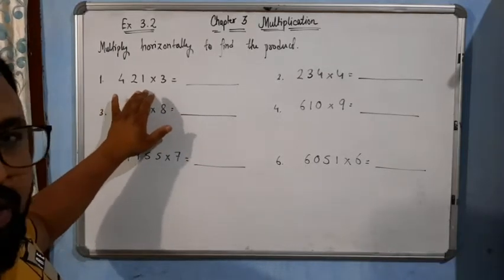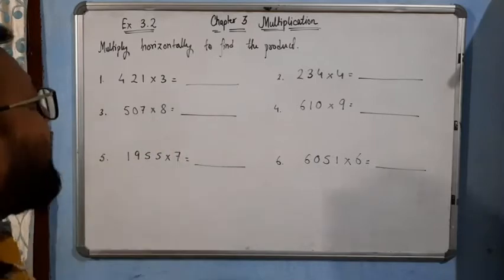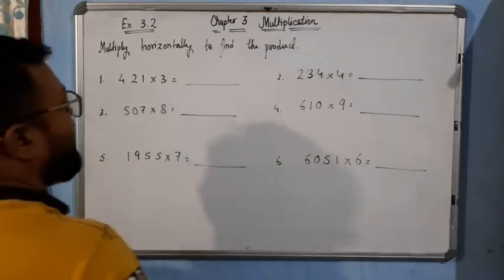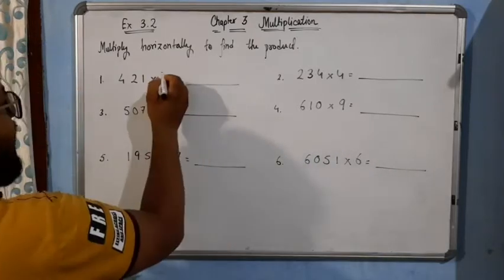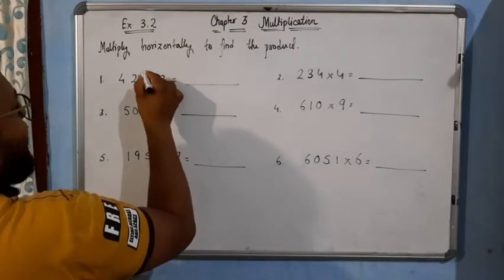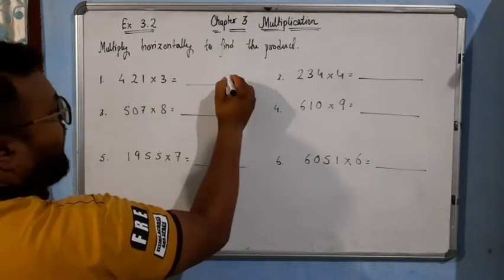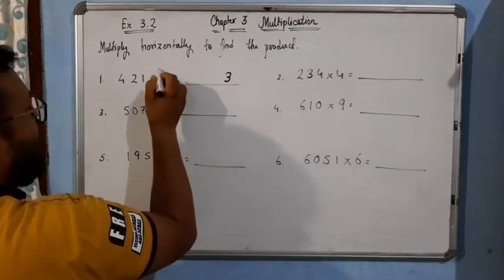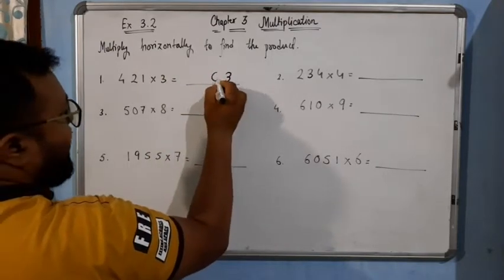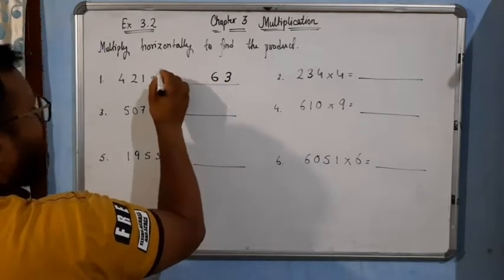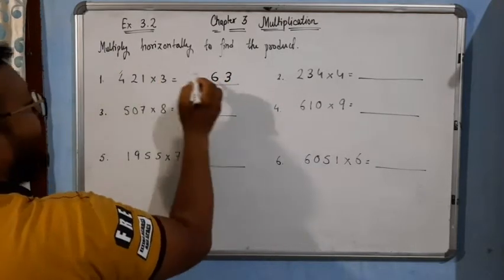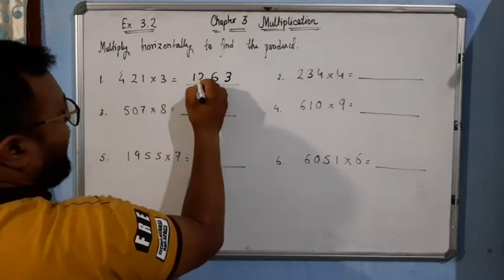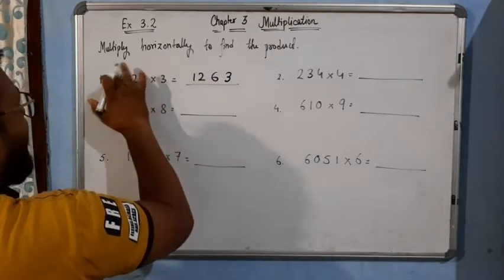421 into 3. How we will multiply? It's very simple. 3 times 1 is 3, and 3 times 2 is 6. 3 times 4 is 12. In this way.